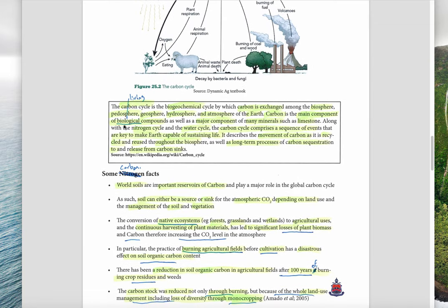The carbon cycle is a biogeochemical cycle by which carbon is exchanged amongst the biosphere, pedosphere, geosphere, hydrosphere, and atmosphere. Carbon is the main component of biological compounds — every living thing is made predominantly of carbon — as well as a major component of many minerals such as limestone. Along with the nitrogen cycle and water cycle, the carbon cycle comprises a sequence of events key to making Earth capable of sustaining life.